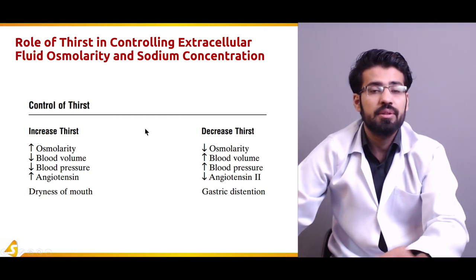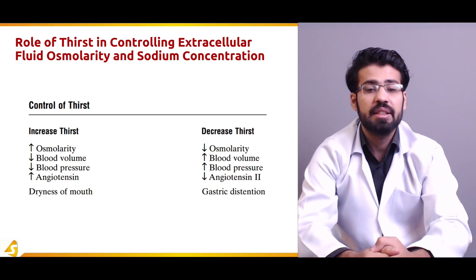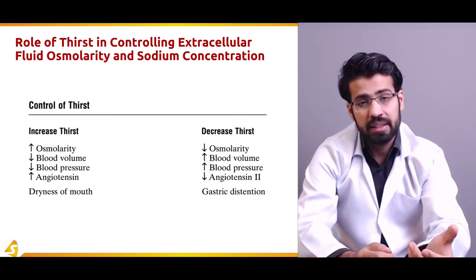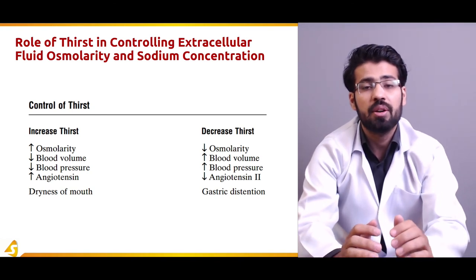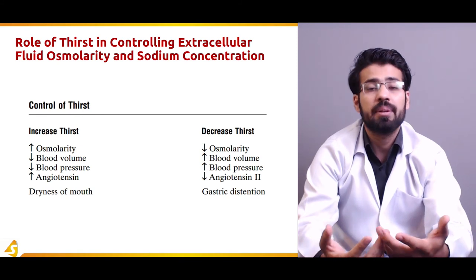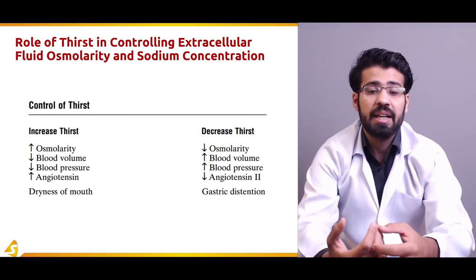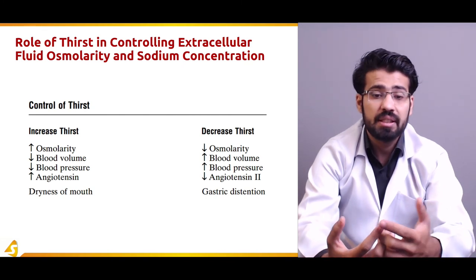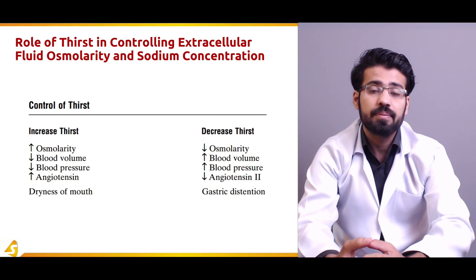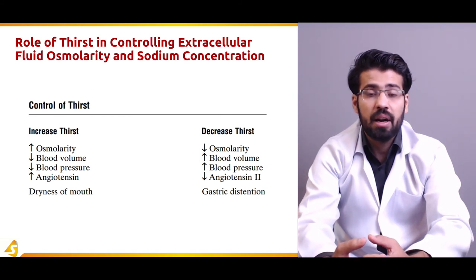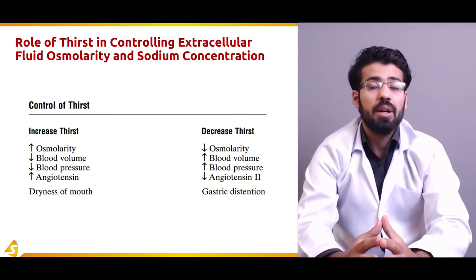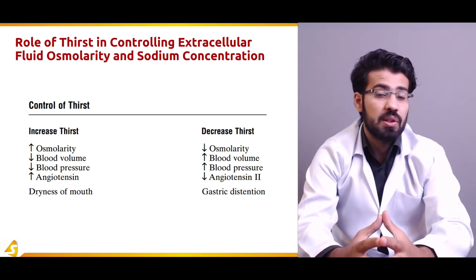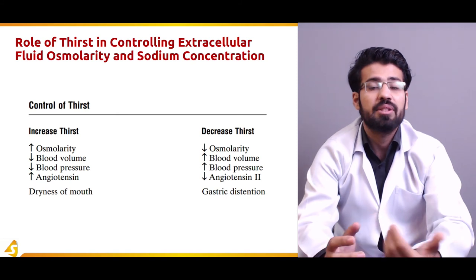Thirst plays an important role in controlling osmolarity and sodium concentration. Increased thirst occurs when osmolarity is increased (low water concentration), blood volume and blood pressure are low, angiotensin II is high, or when there is dryness of the mouth. Decreased thirst occurs when osmolarity is low (excess water), blood volume is high, blood pressure is high, angiotensin II is low, or in the case of gastric distension.